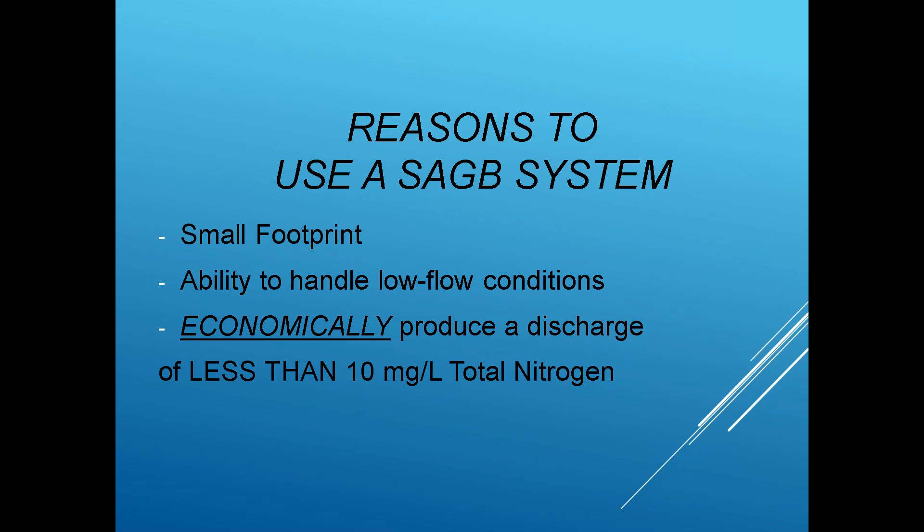There are several reasons to use a SAGBI. One is a small footprint — with 250 square feet per cubic foot of surface area, you have a large surface for your biomass in a compact space. It can handle low flow conditions, making it good for seasonal applications. And it's a really economical way to produce a discharge of less than 10 milligrams per liter of total nitrogen. The system I'm familiar with has a reactor that nitrifies and then a polishing filter that denitrifies, both being SAGBIs.